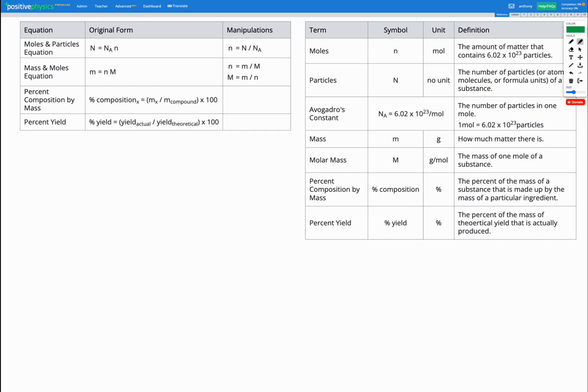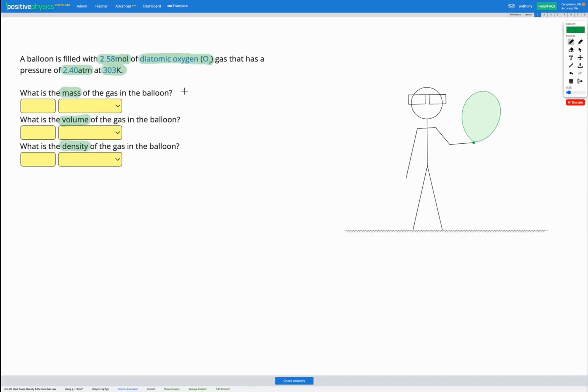This is on the moles page of the reference sheet. We've got the mass and moles equation. Mass is N, the number of moles, multiplied by capital M, which is the molar mass of our substance. So M equals N times capital M. N is our number of moles of gas, which is given here in our question, 2.58, multiplied by M, capital M.